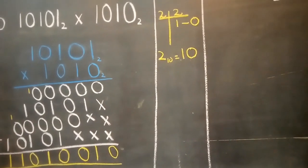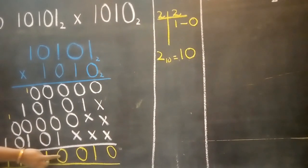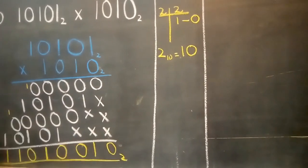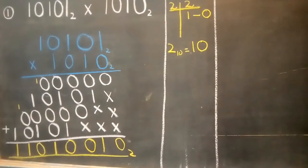So the answer is 1, 1, 0, 1, 0, 0, 0, 1, 0 base 2.